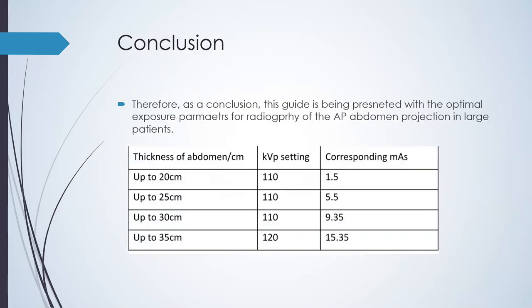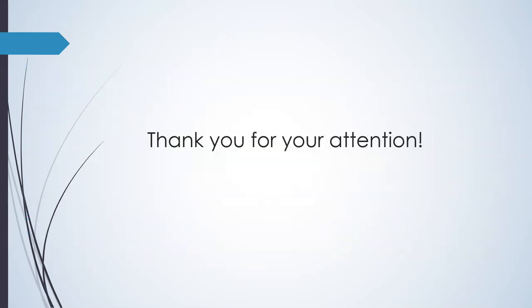To conclude, after a thorough analysis, this guide presents the optimal exposure parameters for radiography of the AP abdomen projection in large patients, with the different thicknesses of the abdomen, the different KVP settings, and the corresponding MAS values. Thank you for your attention.